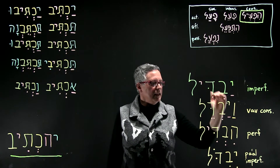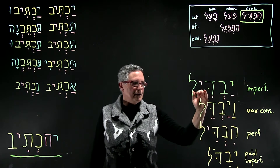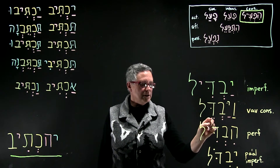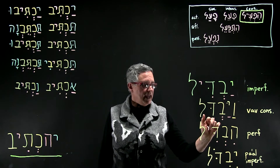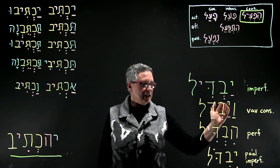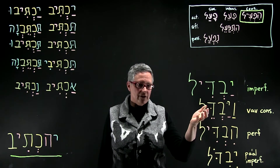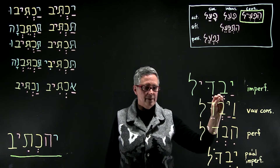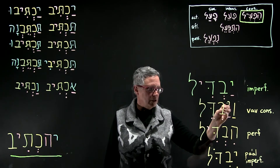In the vav consecutive, the hiriq yod is shortened to tsere. That is true of the vav consecutive most of the time — if the word can shorten, it will.